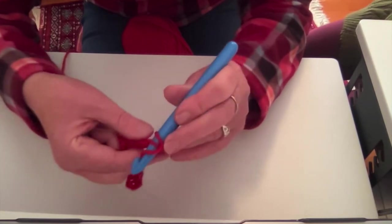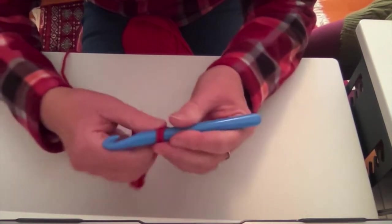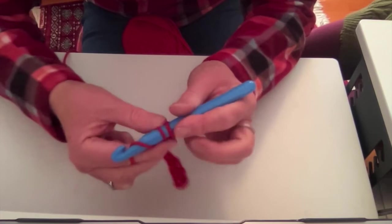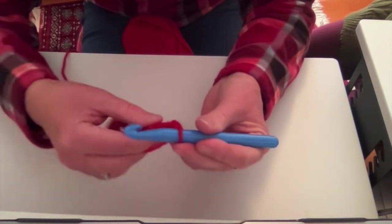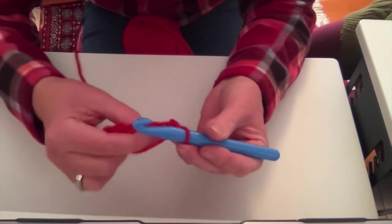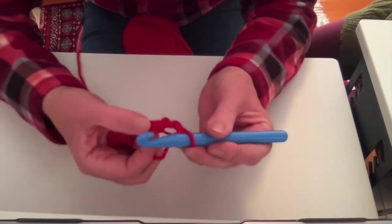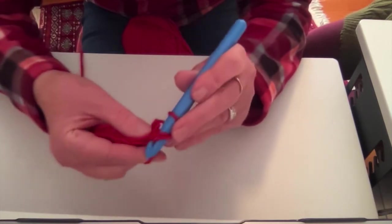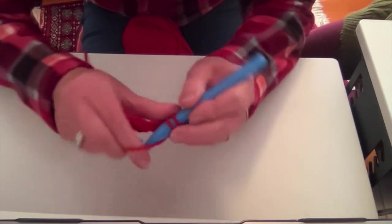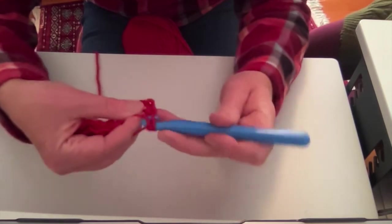Around, pull out. Around, pull through two. Now find that V for the next one. Right there. Down, around, out. Around, out two.